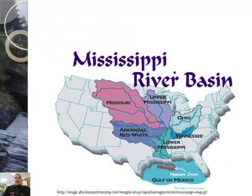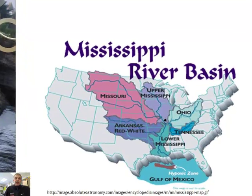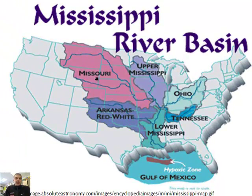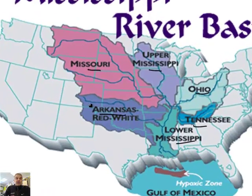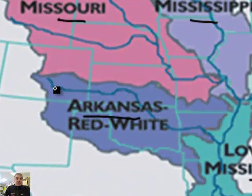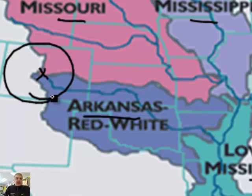An interesting thing I want to talk about is the Mississippi River Basin. If we look at the big areas — the basins — there's the Missouri Basin, the Upper Mississippi, the Ohio, the Tennessee, the Lower Mississippi, and the Arkansas Red White Basin. It's very interesting for Colorado, or at least for us in Woodland Park: we actually live right on the line between the Arkansas and the Missouri basins.